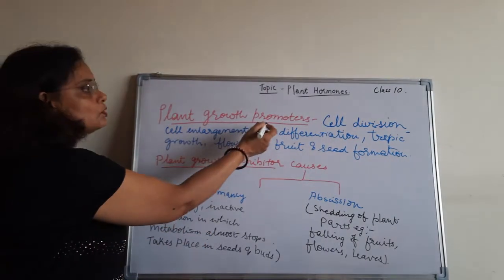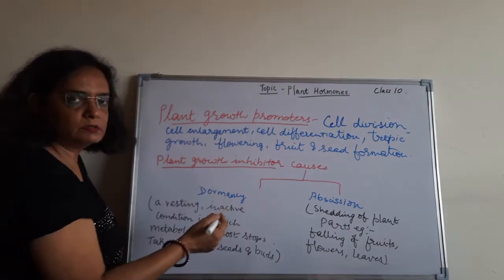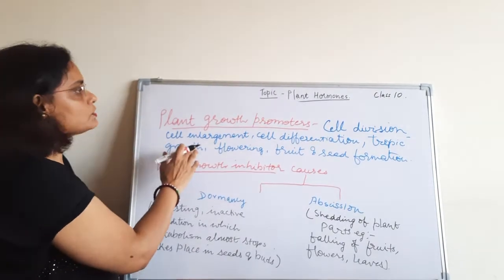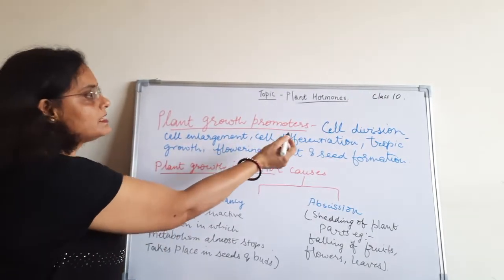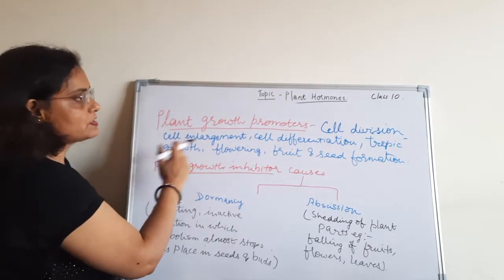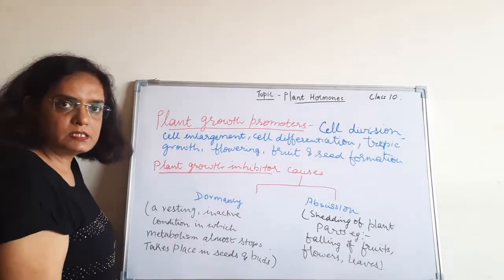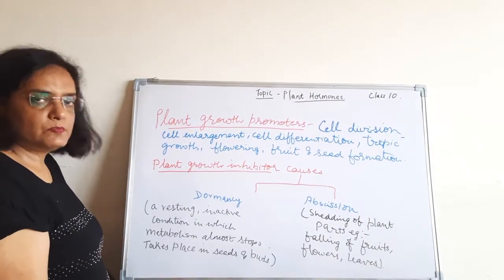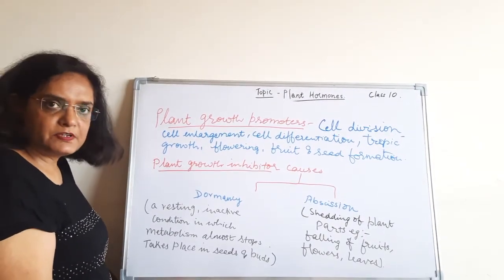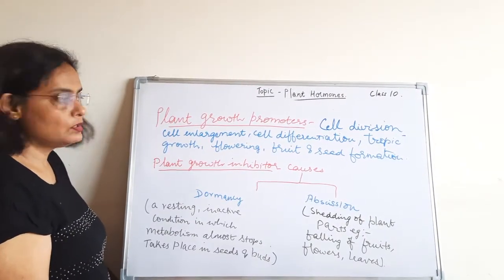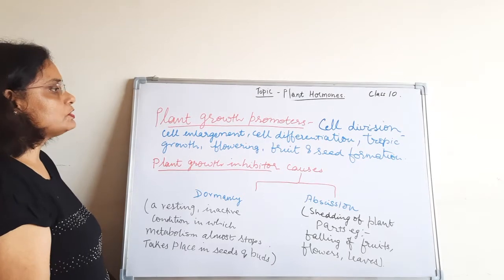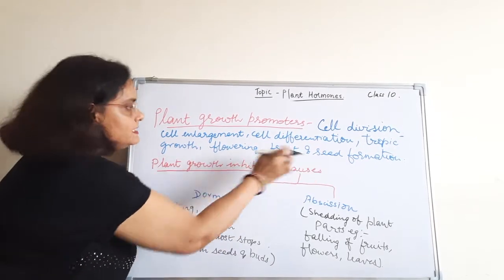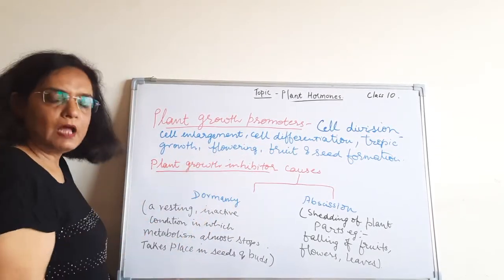Plant growth promoters. The functions of plant growth promoters are the following: they cause cell division, cell enlargement, cell differentiation, tropic growth, and formation of fruit, seed, and flowers.